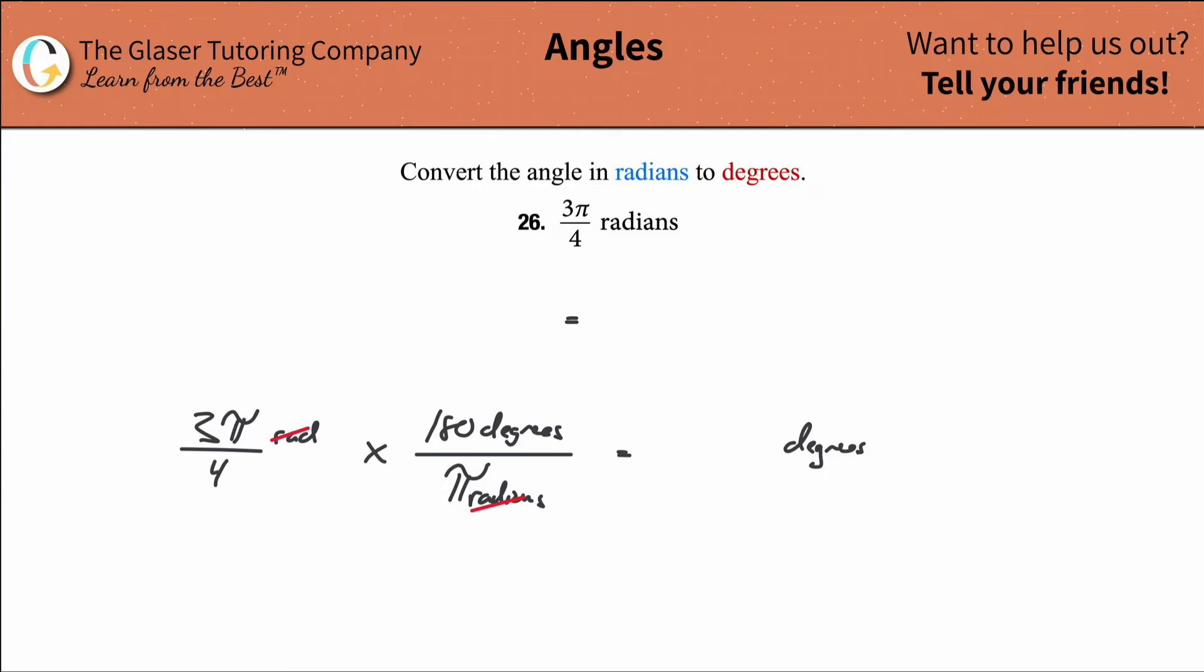And all we now need to do is just kind of simplify. So we would multiply across each of the terms. And instead of doing that right away, I'm going to do some cancellations because the pi's will cancel. They're on opposite sides there, one's in the numerator, one's in the denominator.